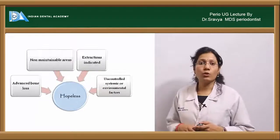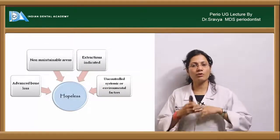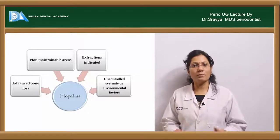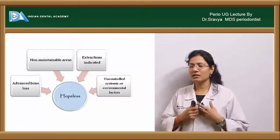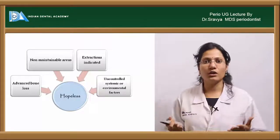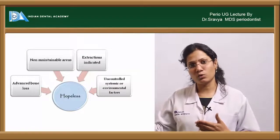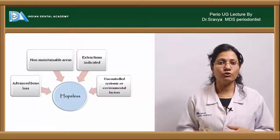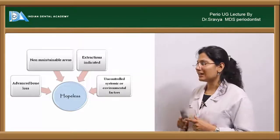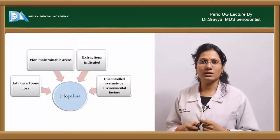When you say hopeless, you feel that there is no hope at all to save the tooth — all the factors are at a compromised state. Non-maintainable areas, severe to advanced bone loss, and extractions are indicated. When you give a tooth a hopeless prognosis, it means you have to go for extraction, and there are uncontrolled systemic or environmental factors.